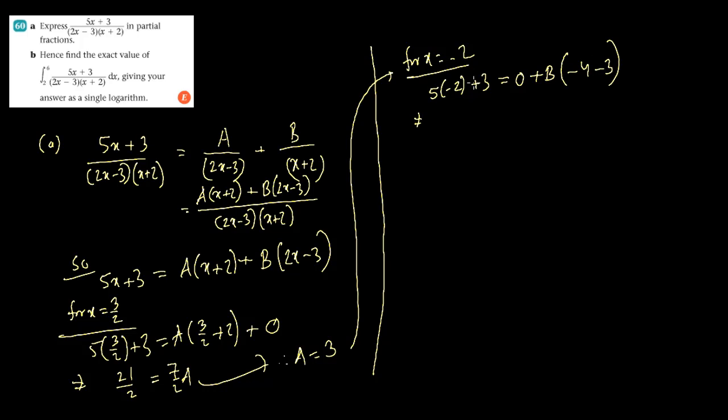That means, -10+3 is -7, and this is -7B. Therefore, B equals to 1. So we can say that if we consider this to be f(x), f(x) is equals to A by, which means 3/(2x-3), plus B by, x+2.